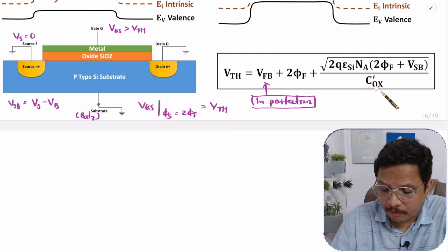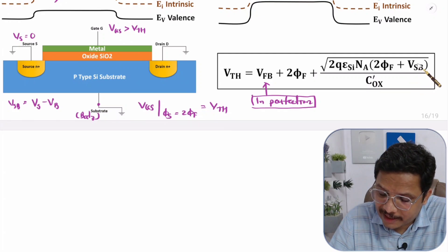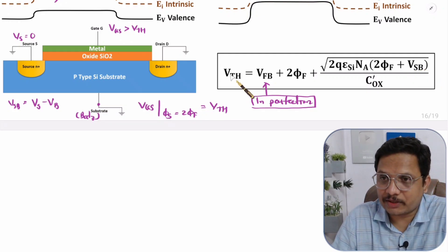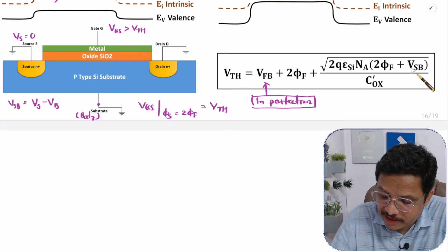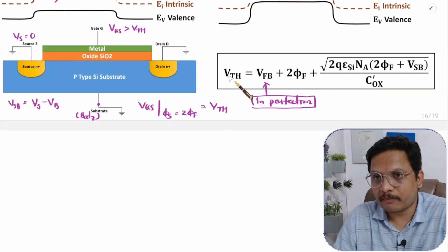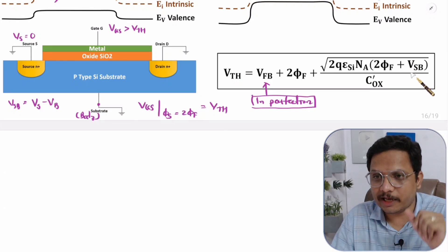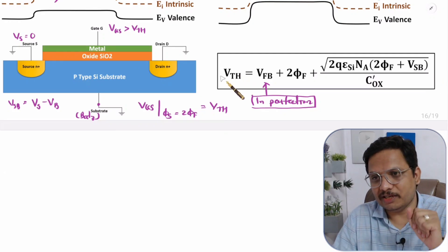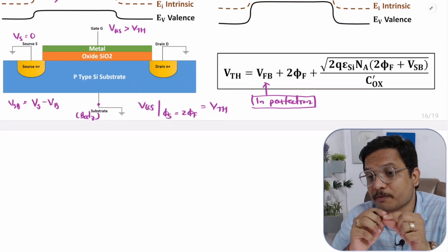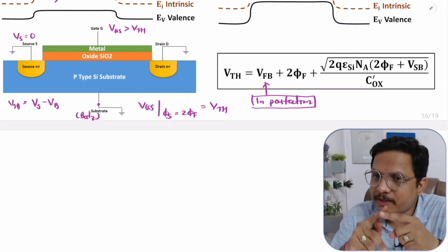If you observe the VSB voltage in the threshold voltage equation, it directly changes VTH. If you increase VSB voltage, VTH increases; if you decrease VSB voltage, VTH decreases. VSB is essentially the body voltage, and based on body voltage, the threshold voltage changes, which in turn changes MOSFET's operational region.